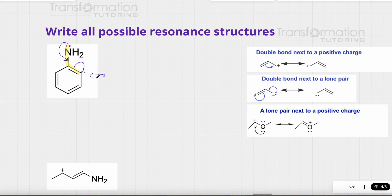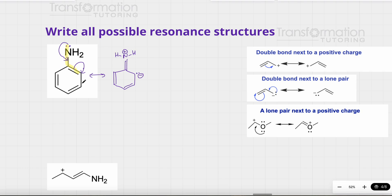For resonance structures, we draw a double-headed arrow. So my nitrogen, which was attached to two hydrogens, used its lone pair to create a double bond — that's what the first arrow shows. This double bond is no longer there because it was used to put a lone pair on this carbon, giving that carbon a negative charge. The nitrogen was neutral but shared its electrons, so it now has a positive charge. Notice that all resonance forms should have the same net charge: here it's zero, and plus one plus minus one equals zero, so we're okay.